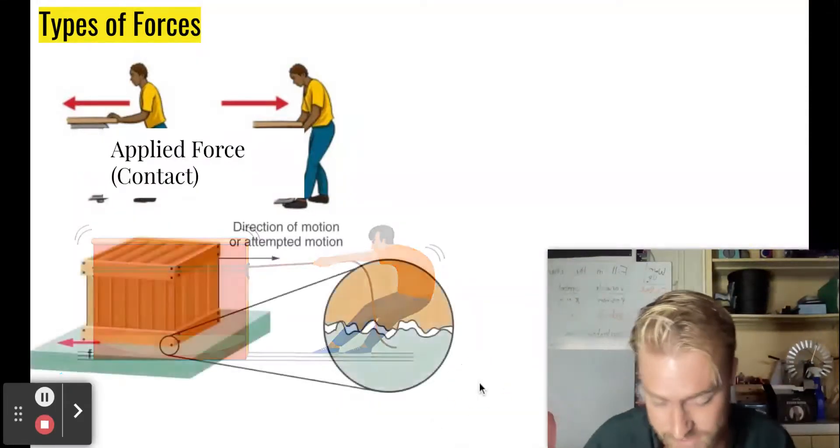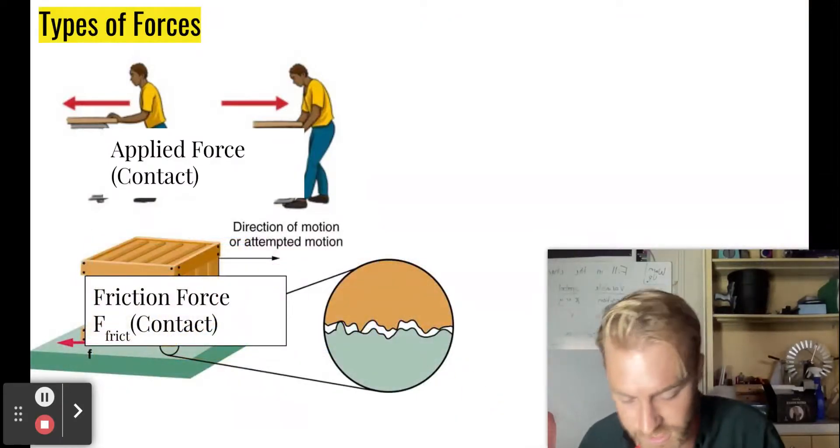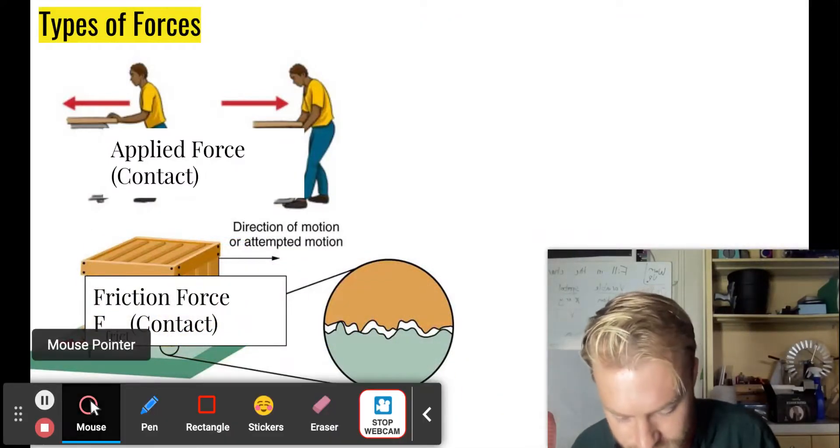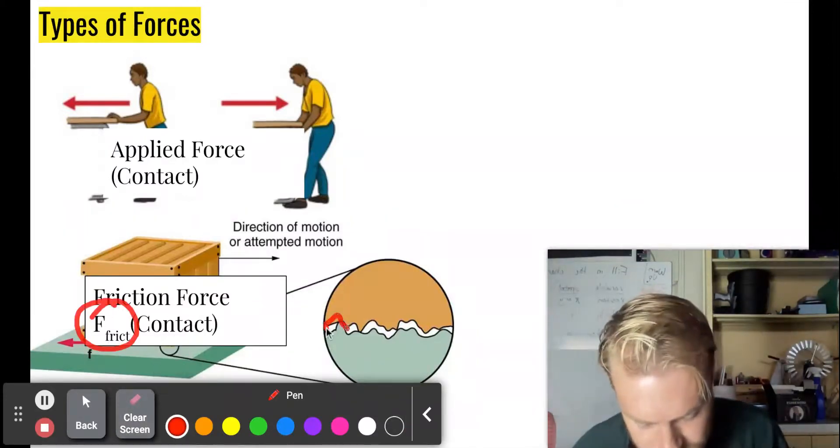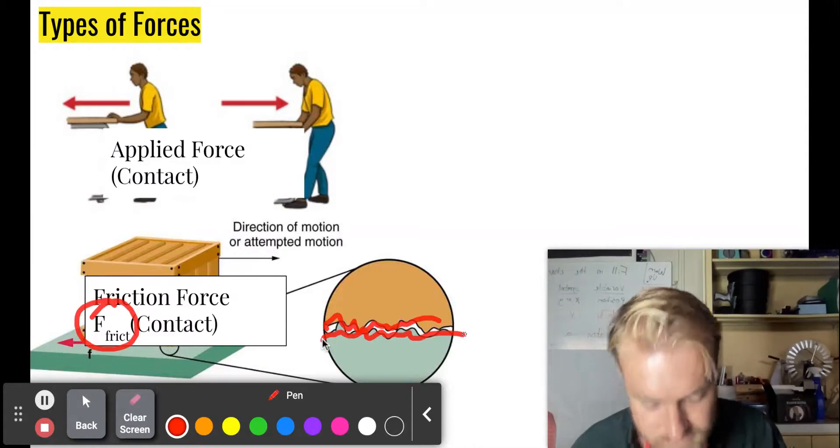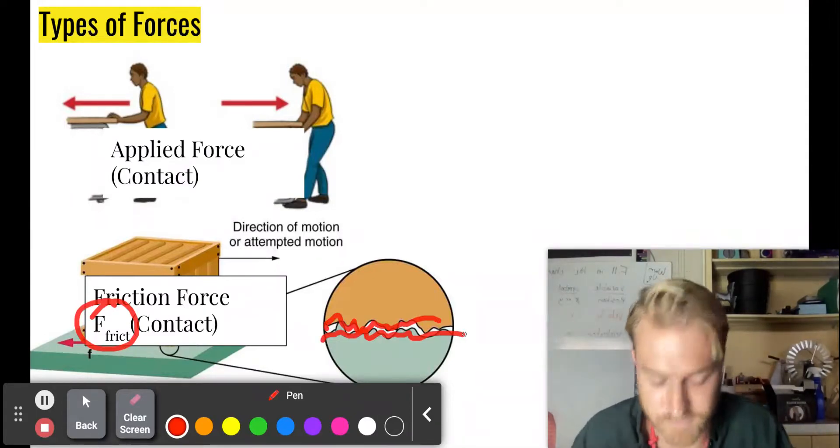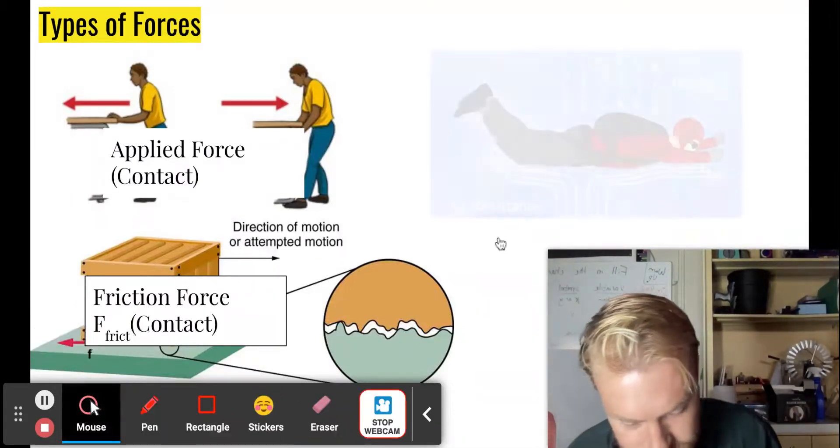There's the force of friction. And that's another contact force. You can see how we write it F sub F or frict. And look at how these surfaces are not even or smooth. And that's how we get the force of friction. They're going to be pushing on each other like that.